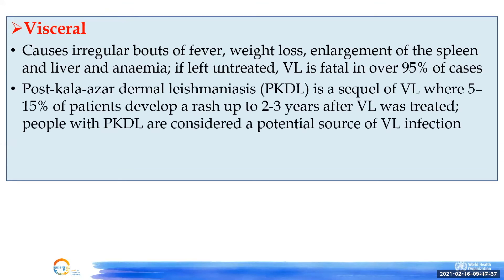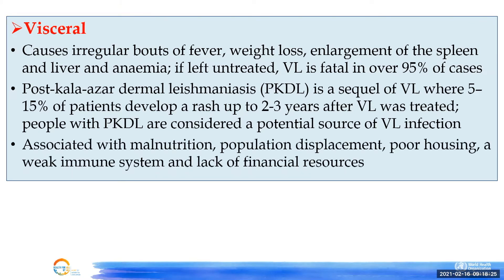Post-kala-azar dermal leishmaniasis is a sequel of visceral leishmaniasis: 5–15% of people who had visceral leishmaniasis develop a rash on the skin during the 2–3 years after full cure of the disease. Importantly, these individuals are considered a potential source of visceral leishmaniasis infection. Like cutaneous leishmaniasis, this is also associated with poverty, population displacement, poor housing, and lack of financial resources.